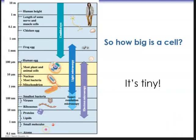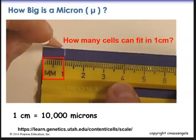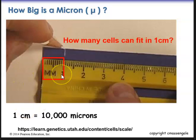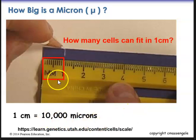Cells are pretty tiny, but how big is a micron? When we look at a ruler using the metric system, about 10,000 microns can fit in one centimeter. So since each cell is about 10 microns big, about 1,000 cells can fit in one centimeter.